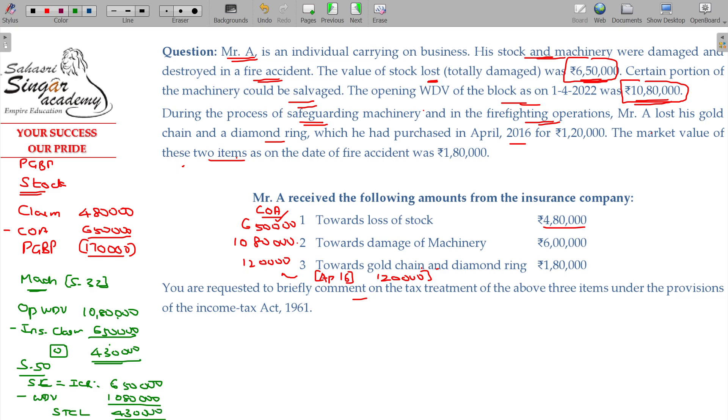And gold chain and diamond ring. Gold chain and diamond ring will be long-term capital gain. Personal asset, gold chain, property, diamond ring. Sale consideration being insurance claim received which is 1 lakh 80,000 rupees. Acquired on April 16.